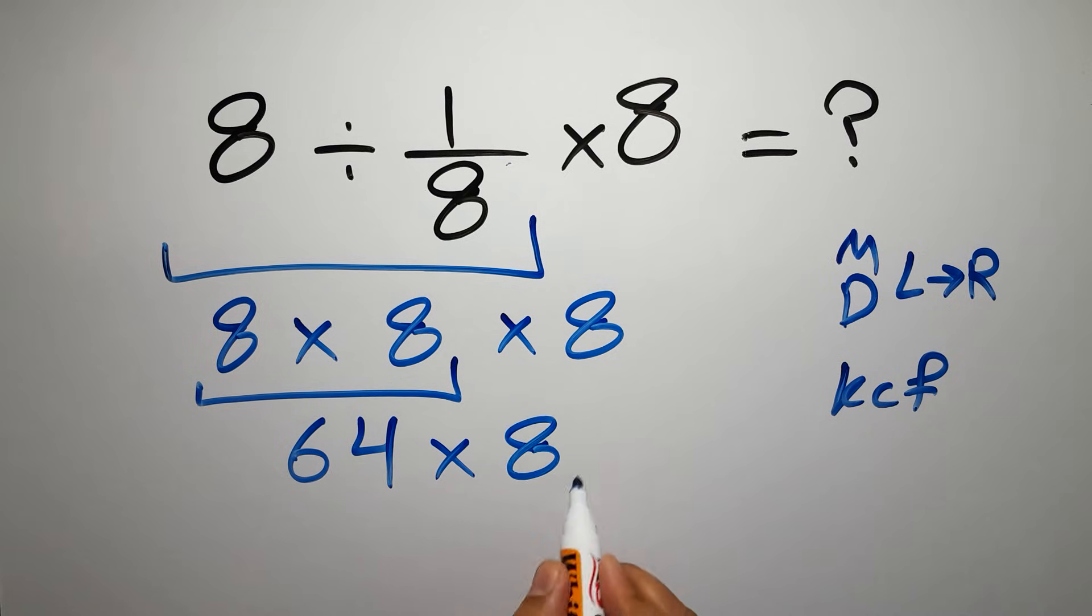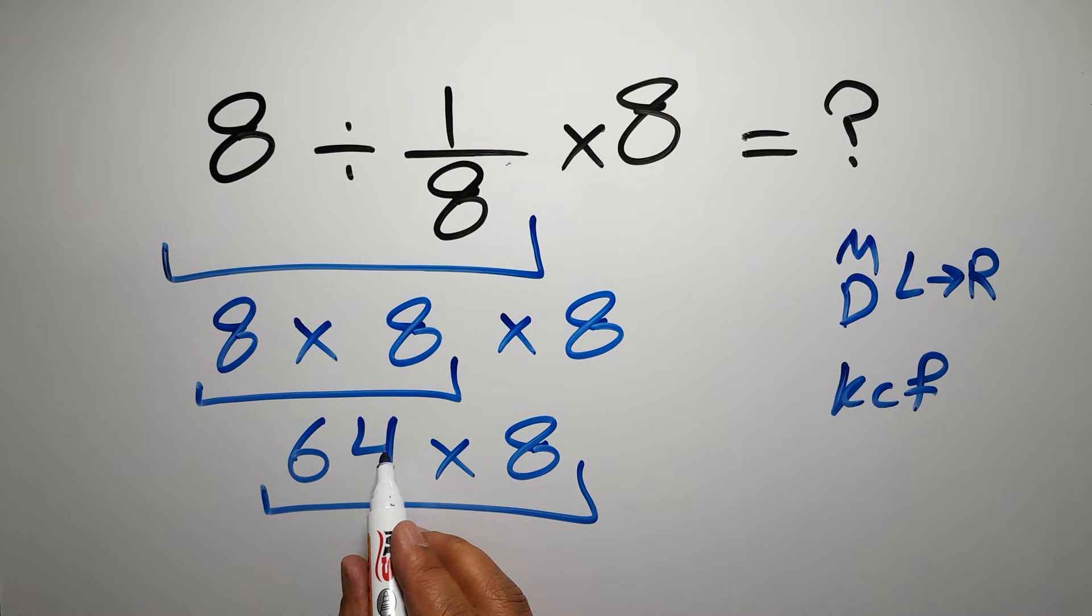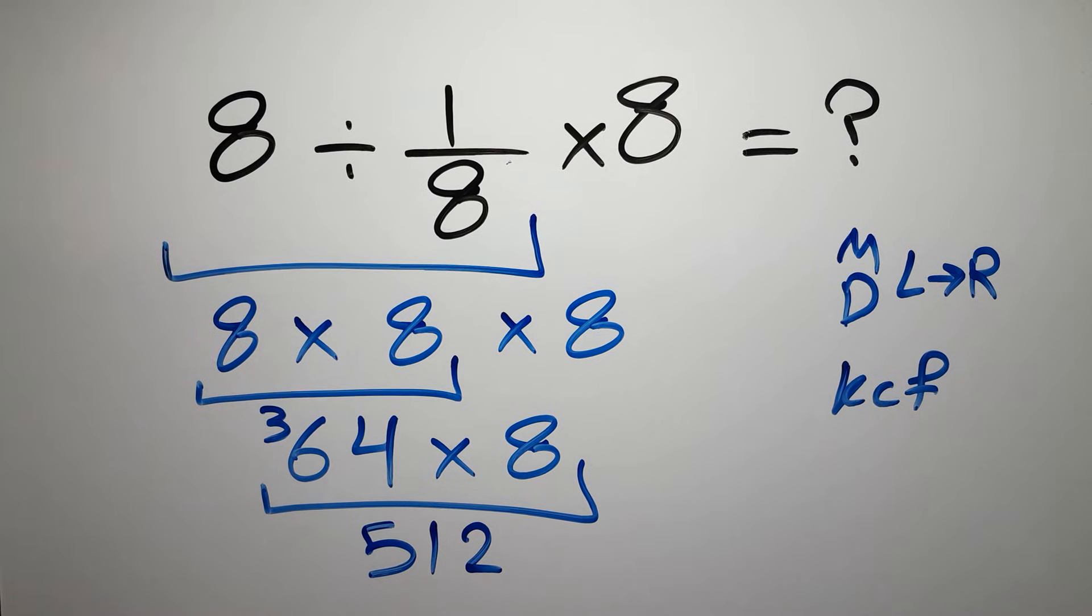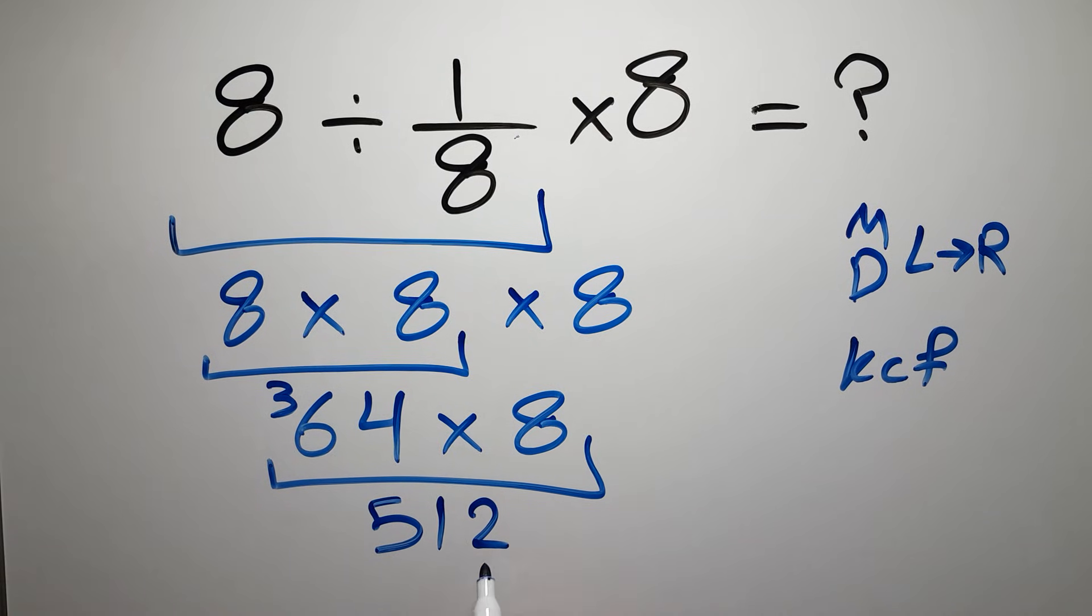Now, 8 times 8 gives us 64, and 64 times 8 gives us... 8 times 4 gives us 32, so we write 2 here and carry 3 here. 8 times 6 gives us 48, and 48 plus 3 gives us 51.